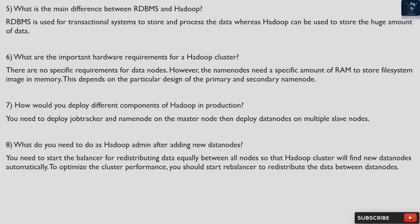However, the name nodes need a specific amount of RAM to store the file system image in memory. This depends on the particular design of the primary and secondary name node. Question 7: How would you deploy different components of Hadoop in production? You need to deploy the job tracker and name node on the master node, then deploy data nodes on multiple slave nodes.